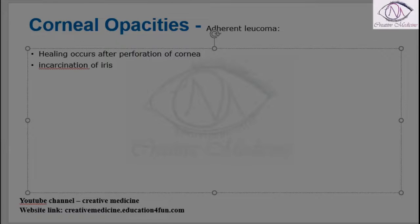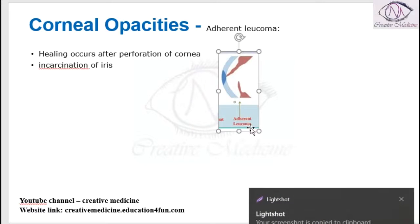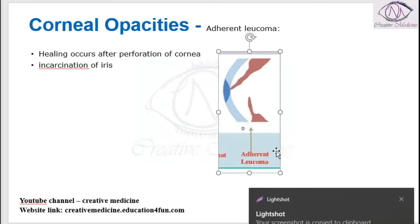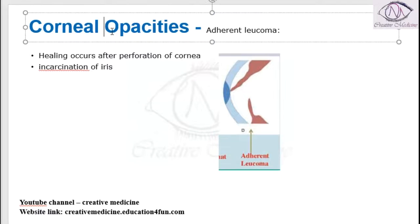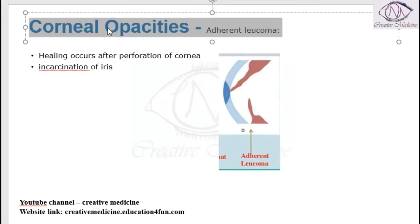If you see the picture, this is the whole thickness of the cornea. There is opacity leading to corneal perforation, and the iris is coming out of the cornea like this — it is adherent, which is called adherent leukoma.